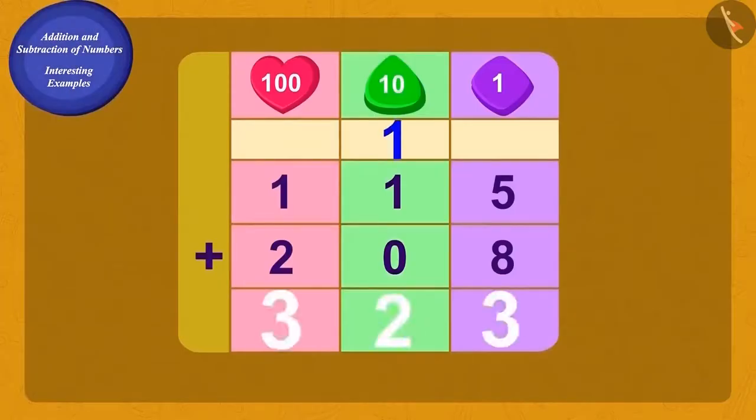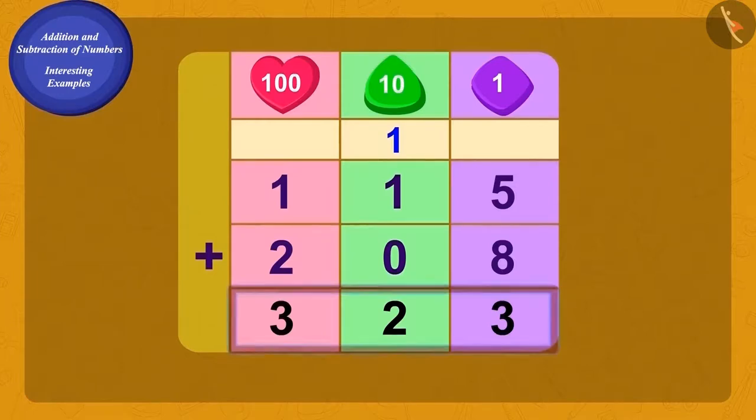Well done, children. You have solved it correctly. Here, we have used the method of addition. Babban previously had a total of 323 hats with him.